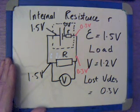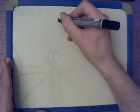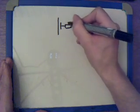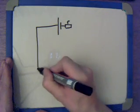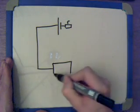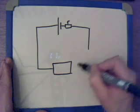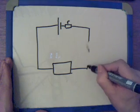OK. I'll rub this out and start with the first page. So, here we have our diagram. This is our cell. This is the internal resistance, R. This is the load.